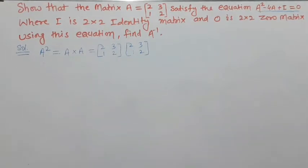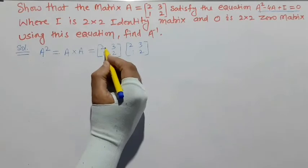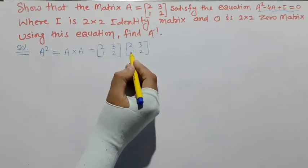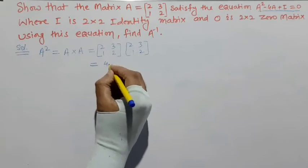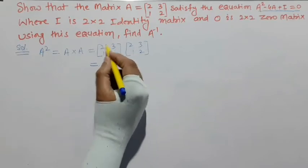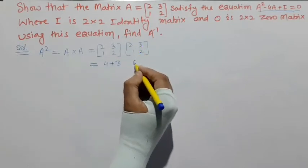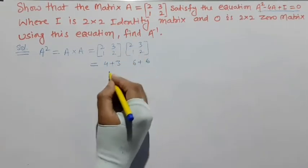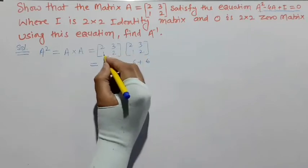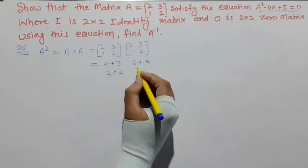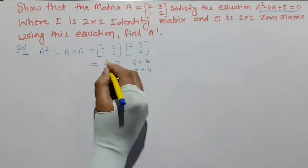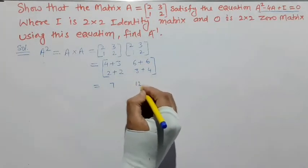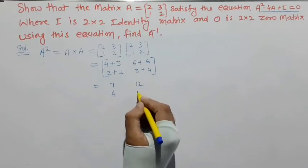We multiply row by column: first row, first column gives 2×2 + 3×1 = 4+3 = 7. First row, second column: 2×3 + 3×2 = 6+6 = 12. Second row, first column: 1×2 + 2×1 = 2+2 = 4. Second row, second column: 1×3 + 2×2 = 3+4 = 7. So A² = [[7,12],[4,7]].